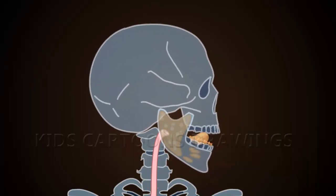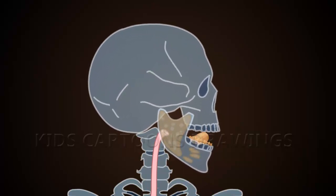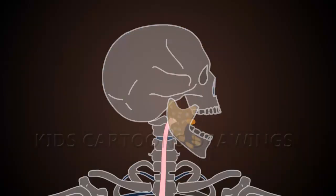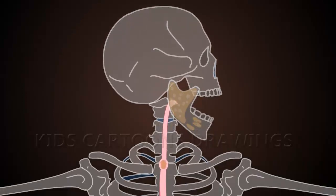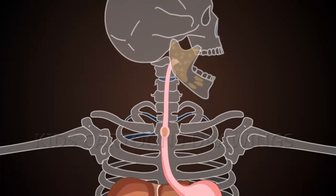After bolus breakdown, swallowing begins. The food bolus passes through the pharynx into the esophagus. The pharynx starts rhythmic muscle contractions, pushing the bolus into the esophagus.